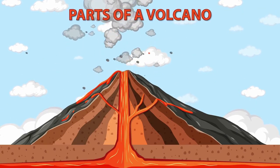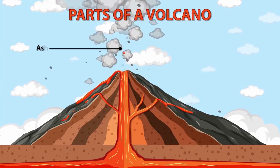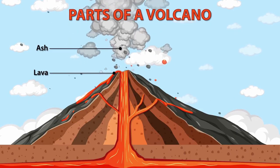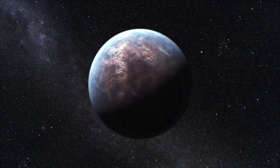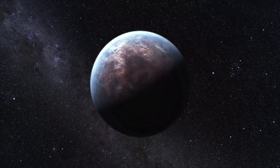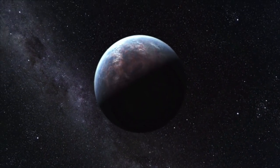Some scientists now propose that GJ1214b could be a water world entirely covered in vast, global oceans. Could life exist in such an alien environment? We might be closer to that answer than ever before.